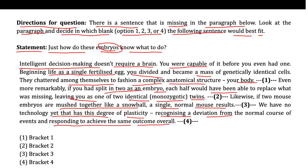We have four options — bracket one, bracket two, bracket three, bracket four — and we need to place the statement 'Just how do these embryos know what to do?' into the correct bracket. We must understand that the blank must logically connect to the statement, so we need to observe the sentence before the blank and the sentence after the blank.